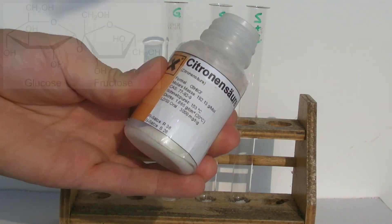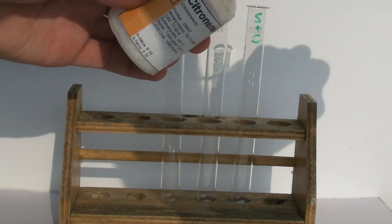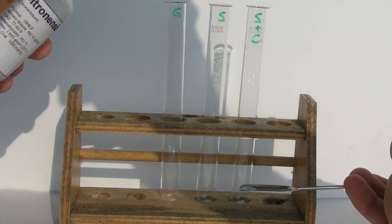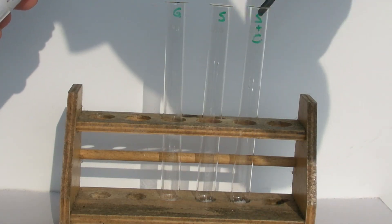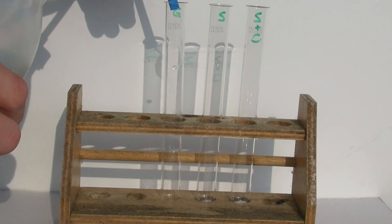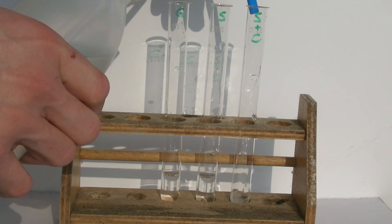To the third test tube, a small amount of citric acid is also added. Then, all samples are dissolved in some distilled water.